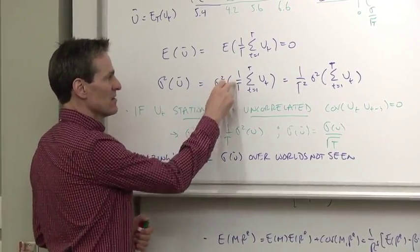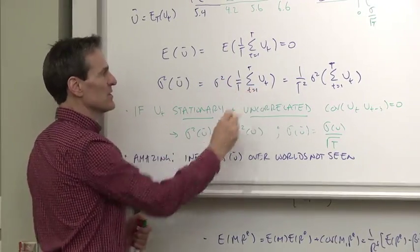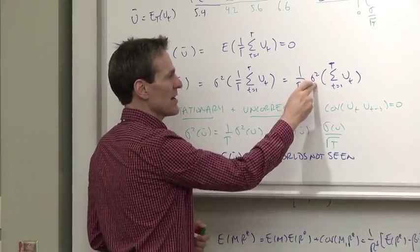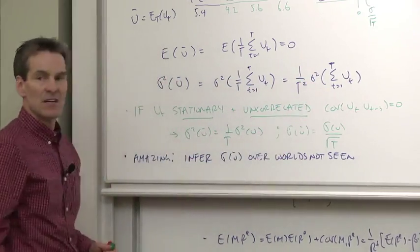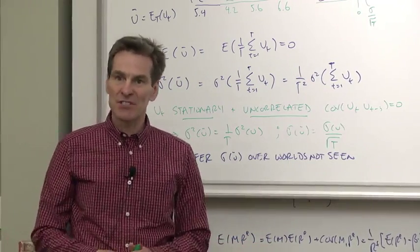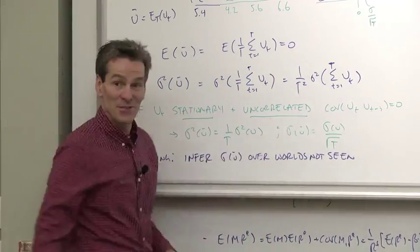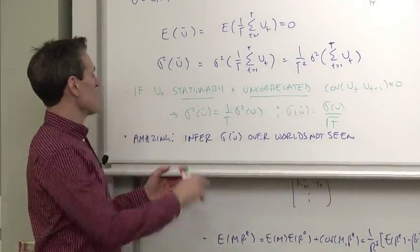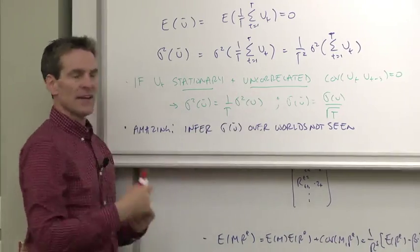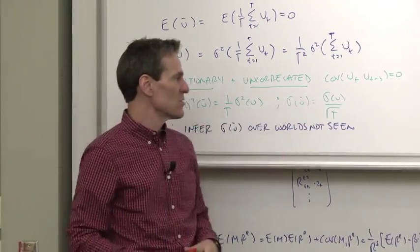Well, that's the variance of a sum of random variables. The 1 over t can come out in front, so 1 over t squared times the variance of the sum of the uts. Now what do we do next? Well, now we need some assumptions. You can't learn about alternative universes without some assumptions. So the standard assumption we make is that the uts are stationary and that they are uncorrelated over time. The covariance terms are all zero.